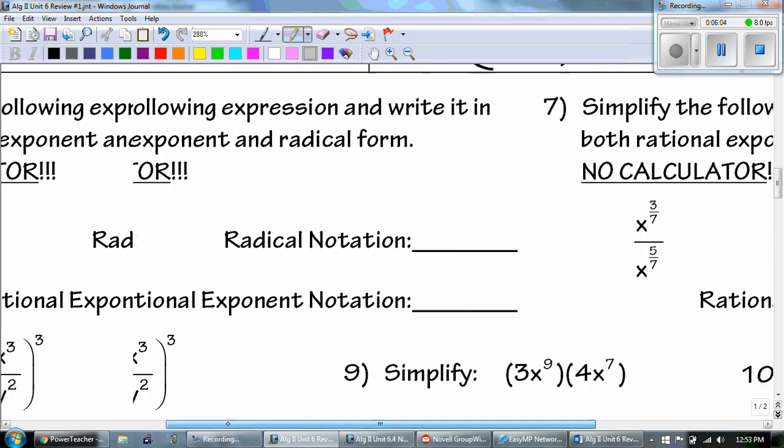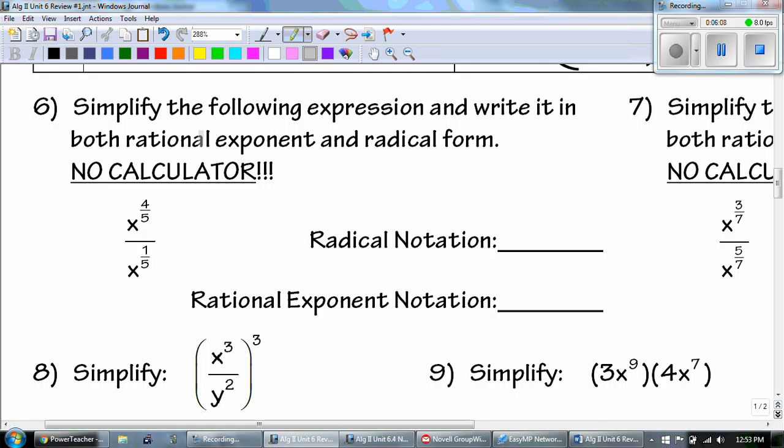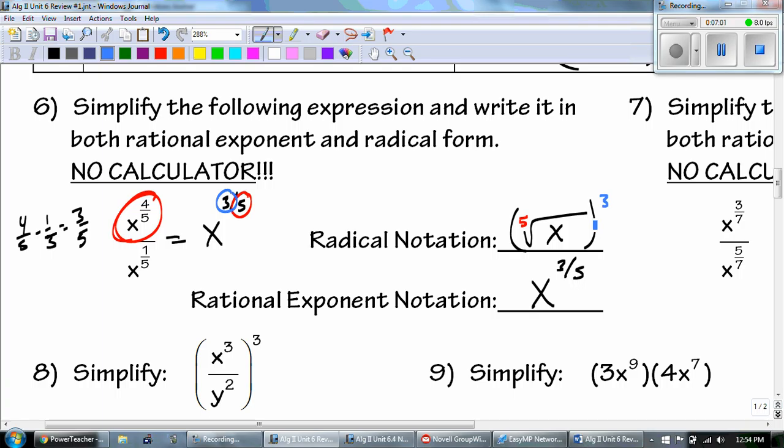Number 6. It says simplify the following expression and write it in both rational exponent and radical form. No calculator. Looking at these, I would want to say, who wins? Does the top win or the bottom win? Well, the top wins. So I would go off to the side and subtract them. 4 minus 1 is 3. So it's 3 fifths. This breaks down to x 3 fifths. And that's my rational exponent notation. Now, radical notation is rewriting it. So my 5 is my root and the 3 is the exponent.